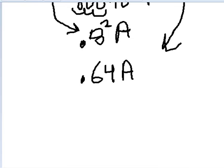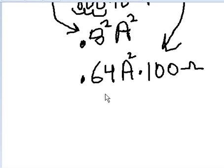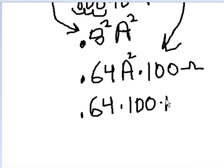I believe our R was 100 ohms times 100 ohms. Whoops, I made a mistake here. This is A squared, 0.8 squared, A squared, amps squared. Very important. 0.8 squared is 0.64. Now let's put these numbers next to each other: 0.64 times 100 times A squared times ohms.